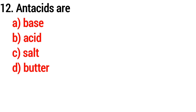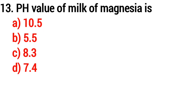Question number twelve: antacids are? Answer option A — bases. Question number thirteen: the pH value of milk of magnesia is? Answer option A — 10.5.